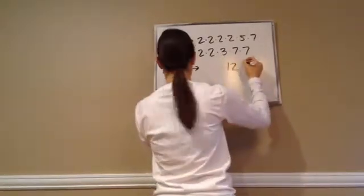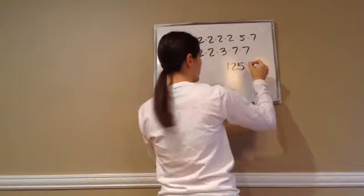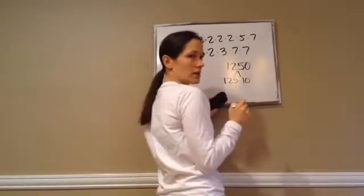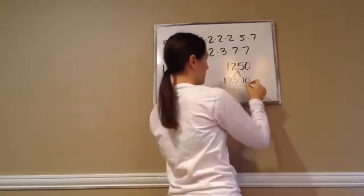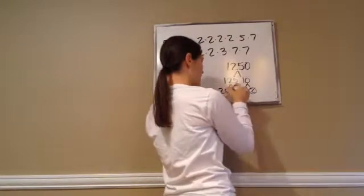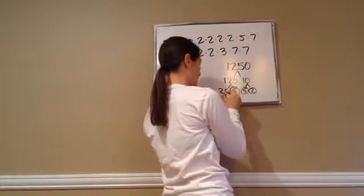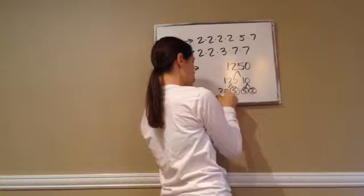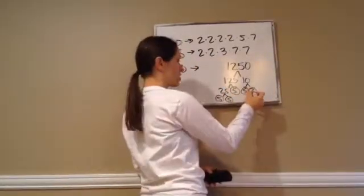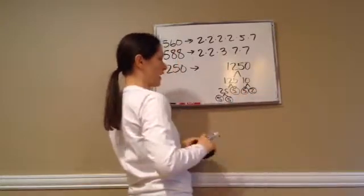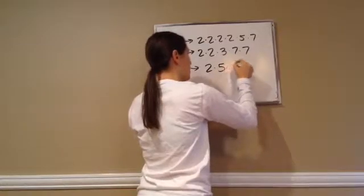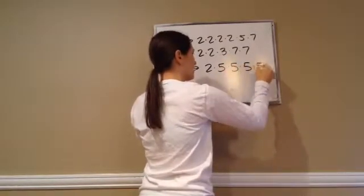And then 1250. I'll do 125 times 10 because it ends in 0. 10 is 5 times 2, both prime. 125 is 25 times 5 — 5 is prime — and 25 is 5 times 5. So for 1250 we have one 2 and four 5s.